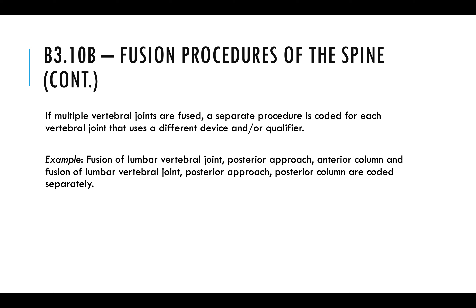If multiple vertebral joints are fused, a separate procedure code is used for each vertebral joint that uses a different device and qualifier. Depending on the position of the spine, the physician can use different techniques to fuse. For example, fusion of the lumbar vertebral joint using a posterior approach, anterior column, and fusion of the lumbar vertebral joint using a posterior approach, posterior column are coded separately — the difference between anterior and posterior column creates the need for a separate code.